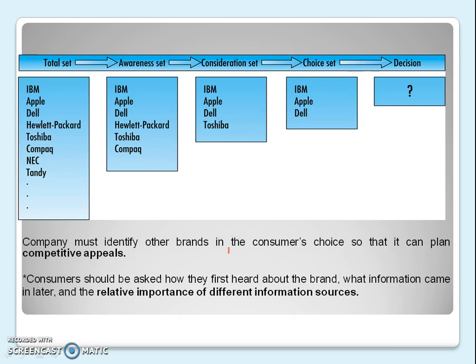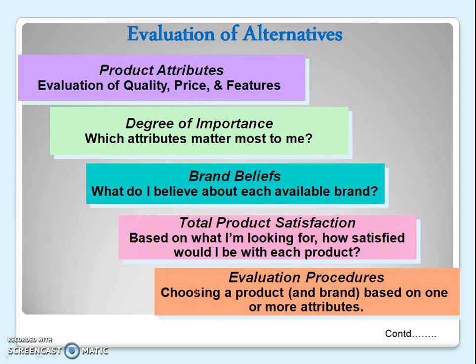Finally, you choose one brand, and that final choice may depend upon last-moment offers from the company. Every company must identify other brands in the consumer's choice set so it can plan competitive appeals accordingly. Companies often ask consumers where they heard about their product — these questionnaires gather information about which information sources consumers use while searching for a product.